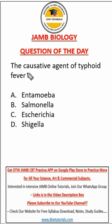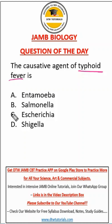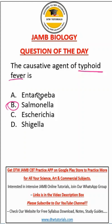This challenge biology question says: the causative agent of typhoid fever is — A: amoeba, B: salmonella, C: shigella, and D: shigella. The correct answer here is salmonella.